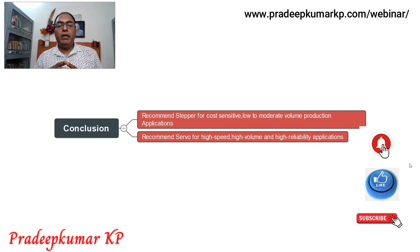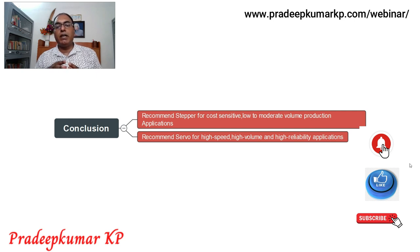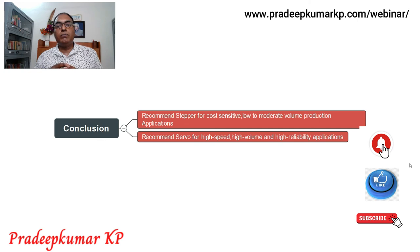We recommend servo for high-speed, high-volume, and high-reliability applications. Performance-wise, servo is much better — it can work at high speed and high volume production. It is also more reliable; you don't need to worry that some dimension will be inaccurate or some steps will be missed while running the machine. Hope this information is useful.